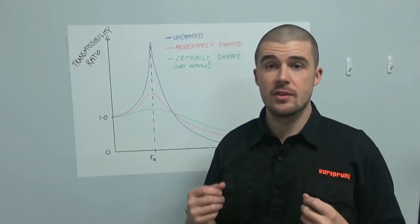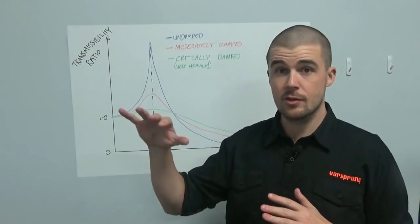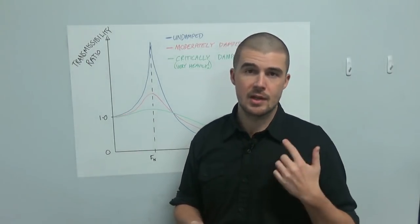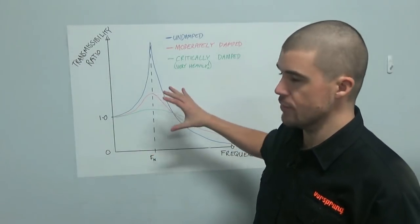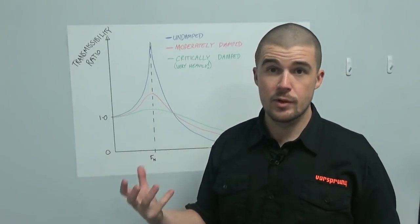The first assumption that it makes is that you have a fixed damping ratio, which would be a linear damper curve that is identical in both compression and rebound. We never have that. The compression and rebound damping are never actually the same. And so the response that you get always varies somewhat from this.